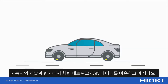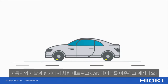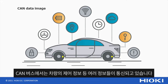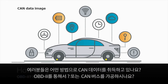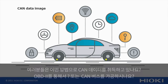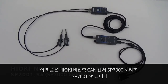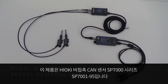Do you use data from CAN bus in the development and evaluation of vehicles? Many types of information, such as vehicle control information, are communicated on the CAN bus. How do you acquire CAN data? This is the non-contact CAN sensor SP7000 series.